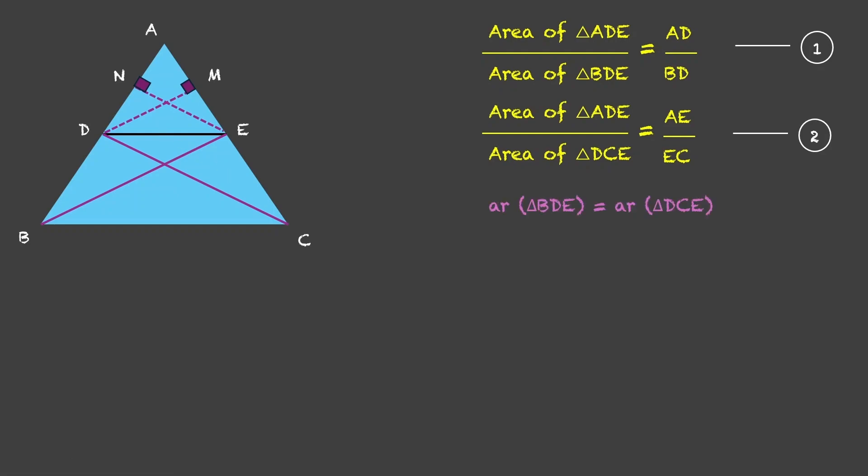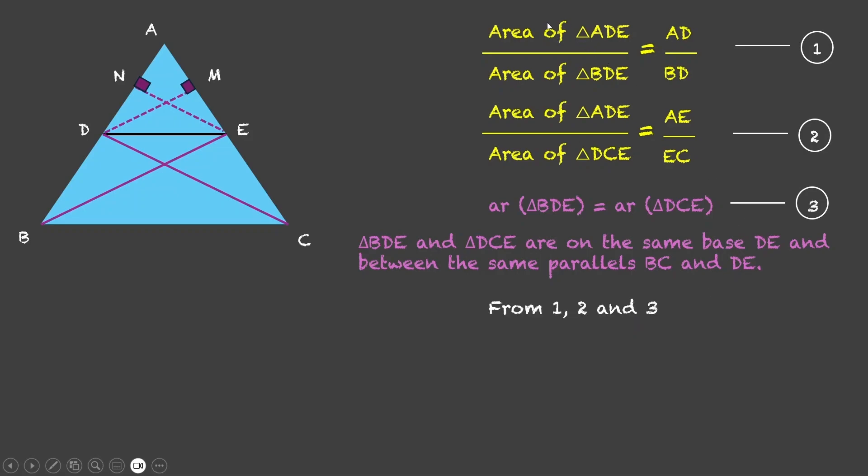And that is because triangle BDE and triangle DCE lie on the same base DE and between same parallel lines DE and BC. If we have two triangles which lie on the same base and between same parallel lines, their areas are equal. Let us call this equation 3. Now, from 1, 2 and 3, we observe that the numerator in 1 and 2 are same. The denominators are equal again. So, the left hand side of both of these equations is equal. That means, the right hand side is also equal. Therefore, AD upon BD is equal to AE upon EC. And that is what we wanted to prove.